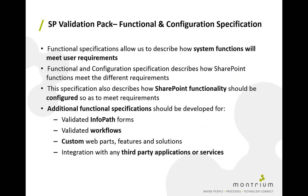The next document is the functional and configuration specification. The functional specification describes how the system functions meet the user requirements we've defined. We've produced these documents and mapped them to our requirement specification. We also describe how we need to configure SharePoint to meet those requirements — out-of-the-box, SharePoint wouldn't be compliant with 21 CFR Part 11. We have to configure it to ensure we're generating audit trails, have proper security, and so on.